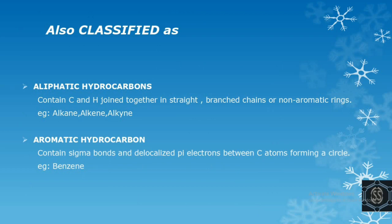Further, hydrocarbons are also classified as aliphatic hydrocarbons and aromatic hydrocarbons. Aliphatic hydrocarbons contain carbon and hydrogen joined together in a straight, branched chain or non-aromatic rings. It includes alkane, alkene, and alkynes. Next is aromatic hydrocarbons. It contains sigma bonds and delocalized pi electrons between carbon atoms forming a circle. That is, for aromatic hydrocarbon they have aromaticity in them. For example, benzene.